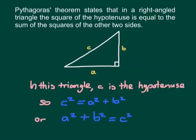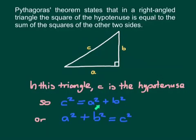So if we apply this rule, it says that C squared — the square of the hypotenuse — is equal to the sum of A squared plus B squared. So C squared equals A squared plus B squared, or A squared plus B squared equals C squared.